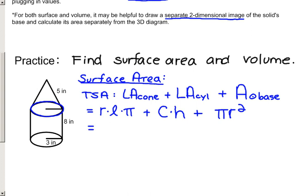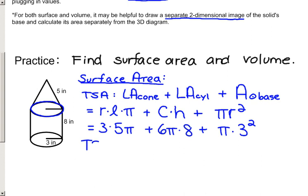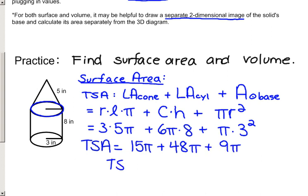Filling in our values: the radius of the cone is 3, the slant height is 5, times pi. The circumference would be the diameter times pi, so 6 pi, times the height of the cylinder which is 8, plus pi times the radius squared, so 3 squared pi. Our total surface area adds up to 15 pi plus 48 pi plus 9 pi. So 15 plus 9 makes 24 pi, plus 48 pi, for a total surface area of 72 pi inches squared.